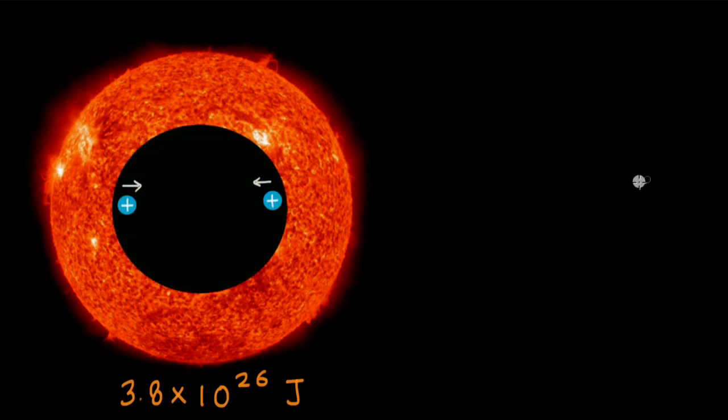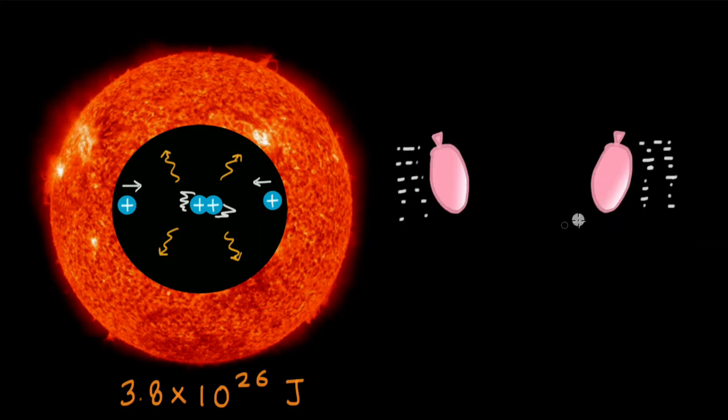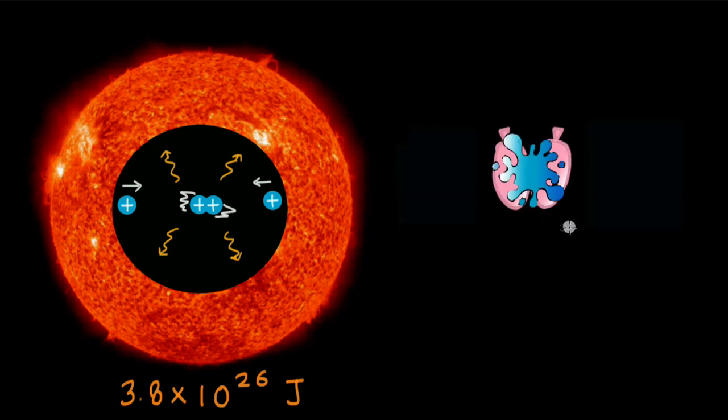Now, as we speak, protons are smashing into each other in the sun's core, releasing a huge amount of energy. This kind of reaction is called nuclear fusion. Just like if we had two water balloons approaching each other with some velocity, colliding and in doing so, releasing the water inside.